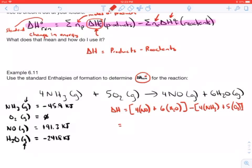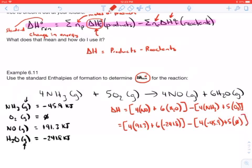So now we just start plugging it in and solve these babies out. So we've got four times 91.3 plus six times negative 241.8 minus four times negative 45.9. And then we've got plus five times zero. Again we would not have to include it. I'm just showing it there so everybody can see how we're working.